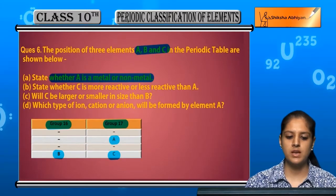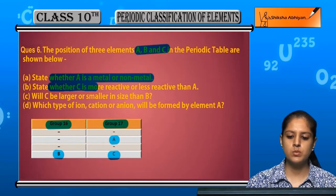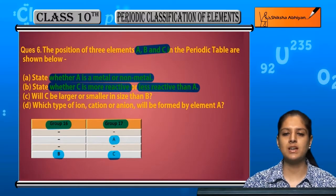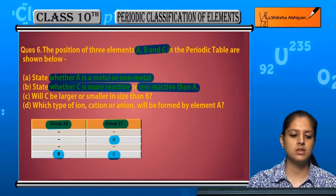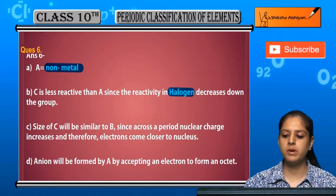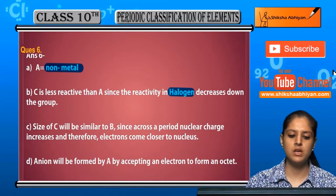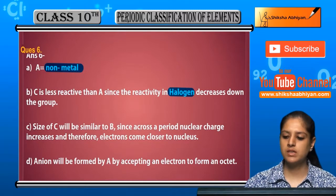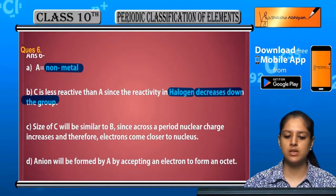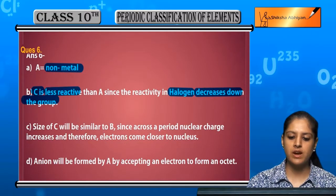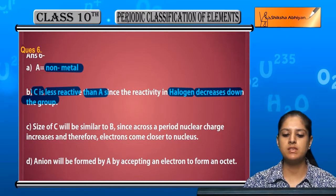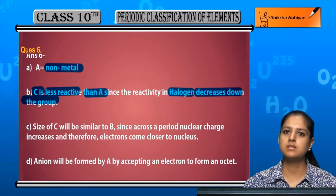Second: state whether C is more reactive or less reactive than A. Group 17 is the halogen group, and for halogens reactivity decreases down the group. So C is less reactive and A is more reactive — comparatively, A is more reactive than C.